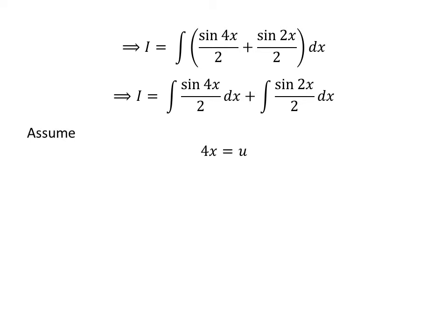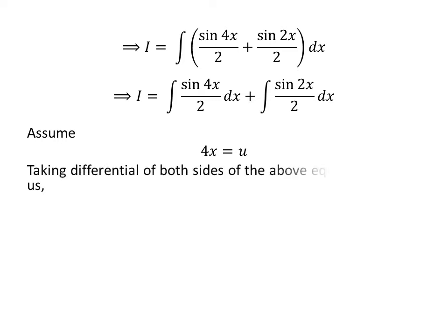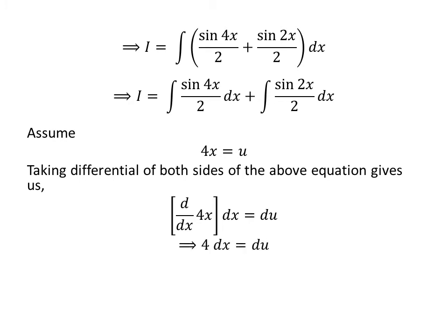Let us solve the integral of sine of 4 times x upon 2 with respect to x. I have applied the substitution method to solve this integral. Let us assume 4 times x is equal to u. Differentiating both sides gives us the derivative of 4 times x with respect to x, times differential of x, is equal to differential of u. As the derivative of 4 times x is 4, so 4 times differential of x is equal to differential of u. Taking 4 to the right-hand side gives us differential of x is equal to 1 upon 4 times differential of u.